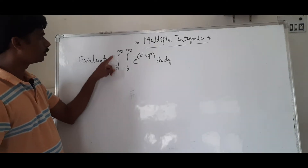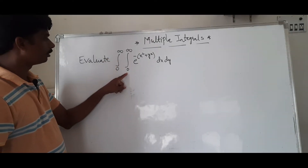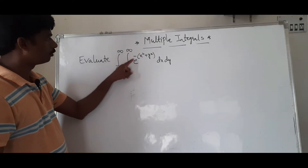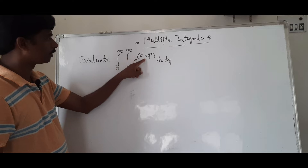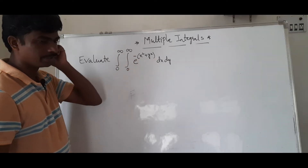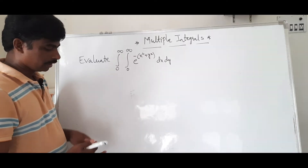Evaluate: integral 0 to infinity, integral 0 to infinity, e to the power minus of (x squared plus y squared), into dx dy.